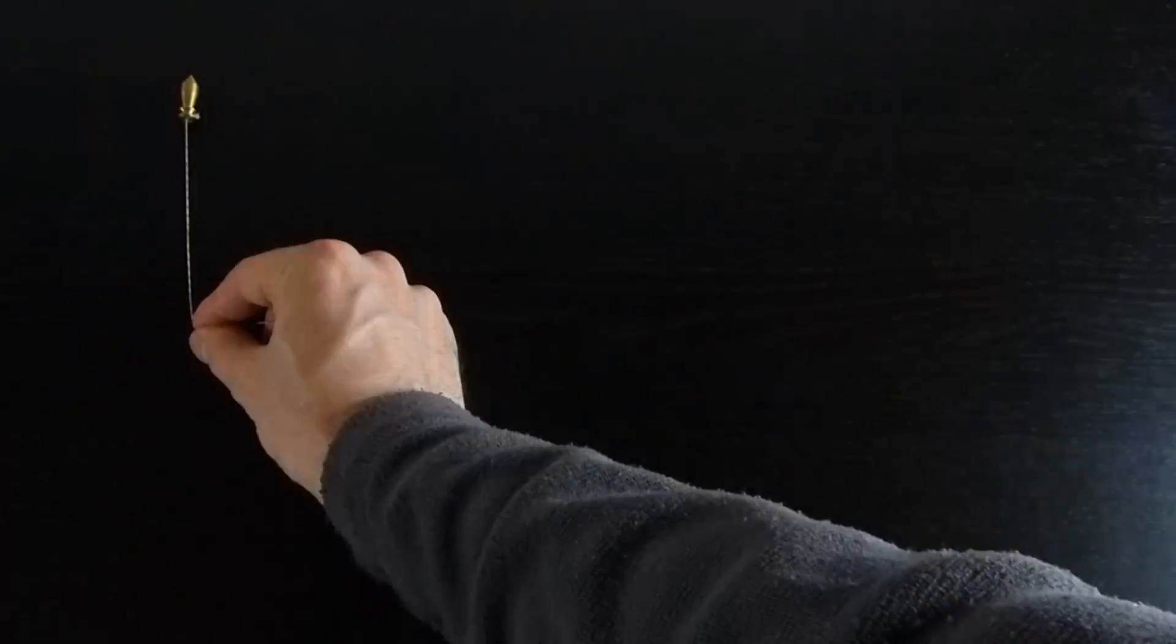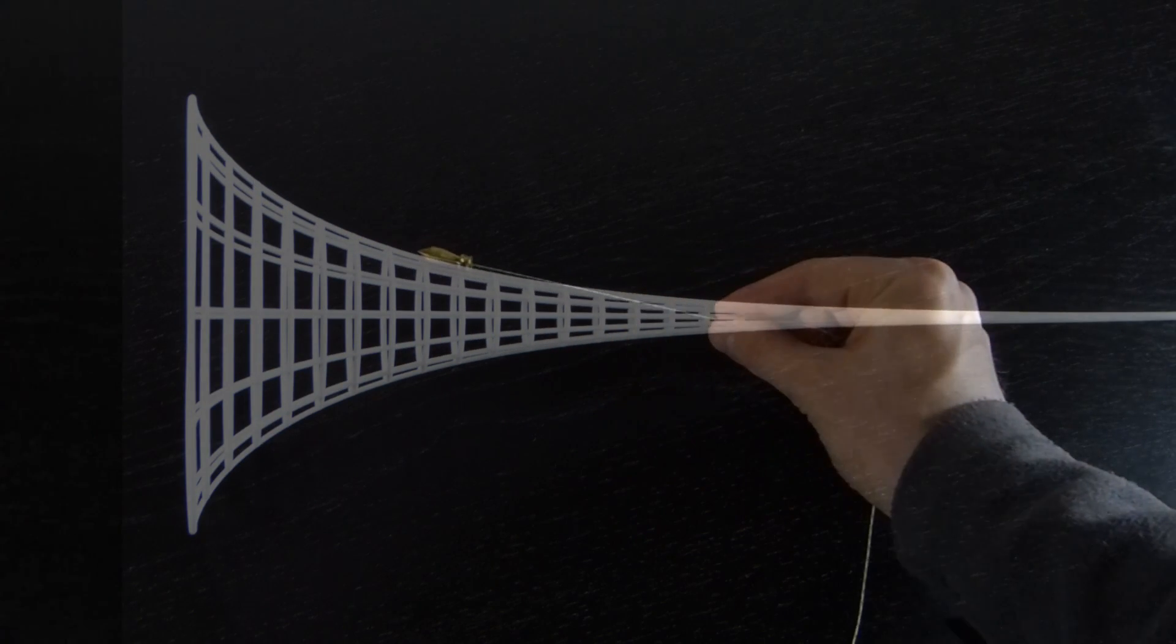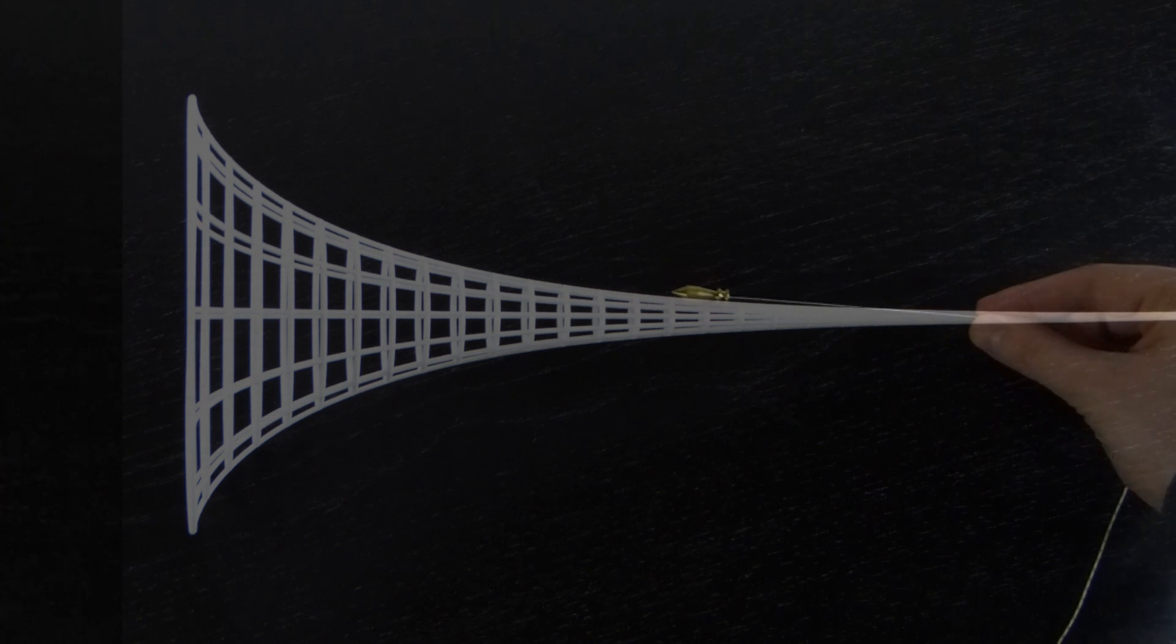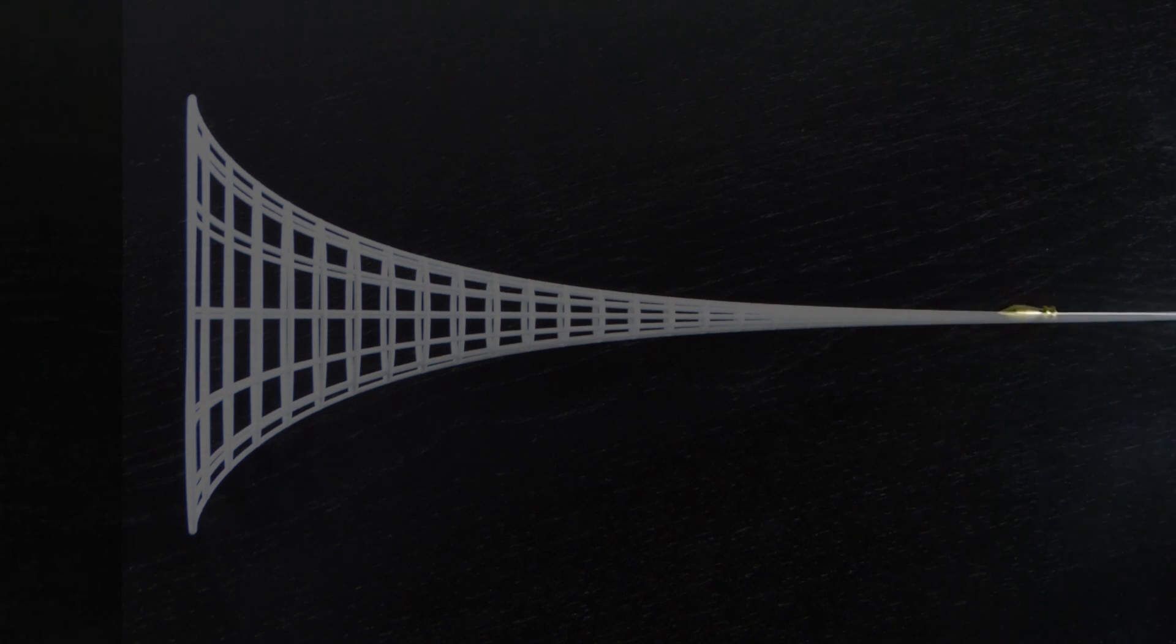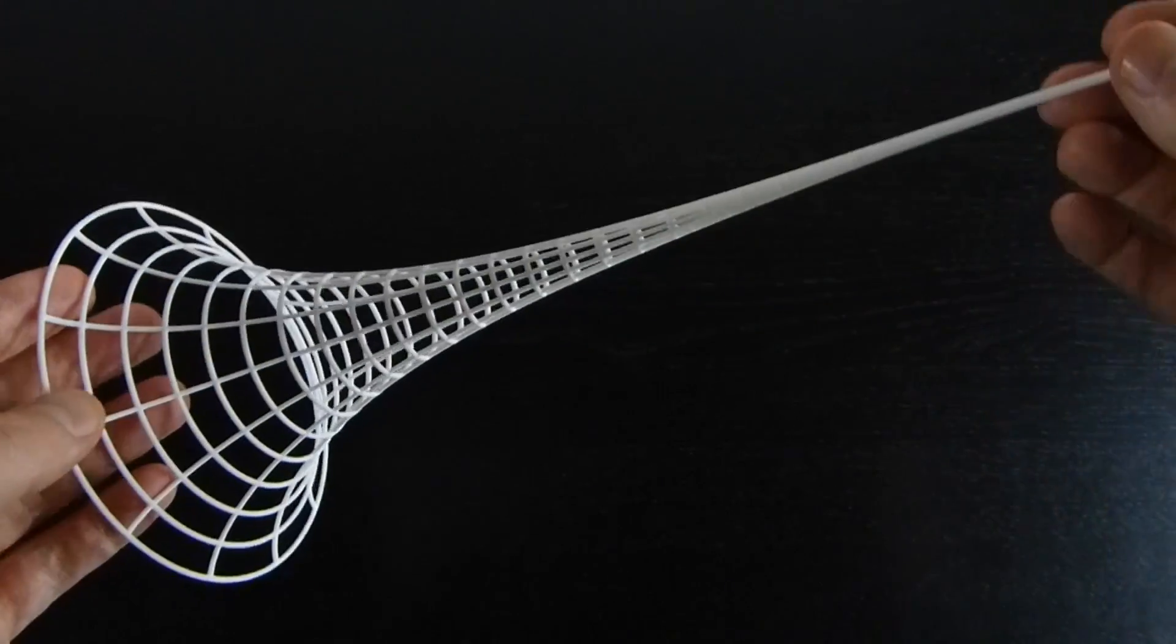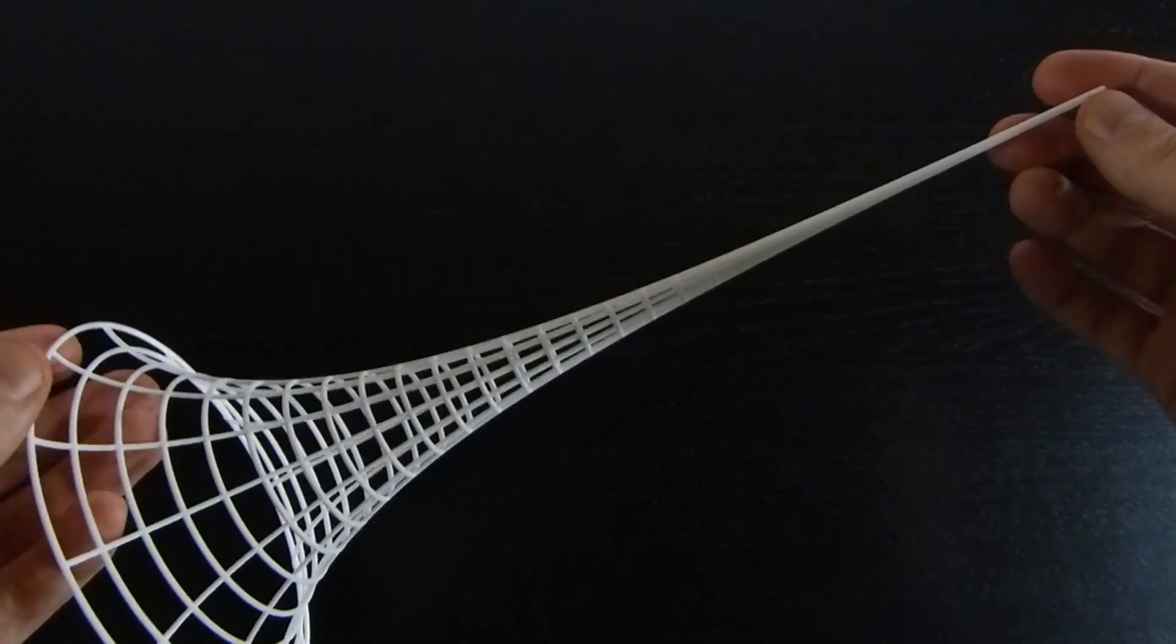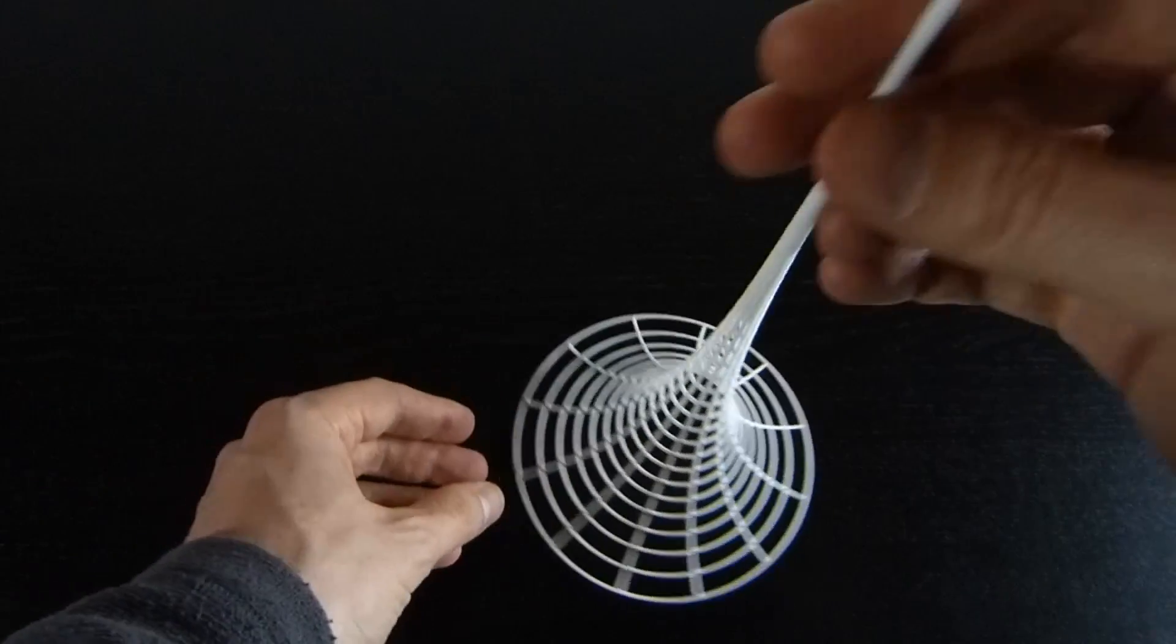What is the tractrix? The tractrix is the curve that you get by starting with a weight on a string and pulling the string across to the side, and then you see where the weight goes. That's how you define the tractrix. And then, when you revolve the tractrix around an axis, you get the Pseudosphere.